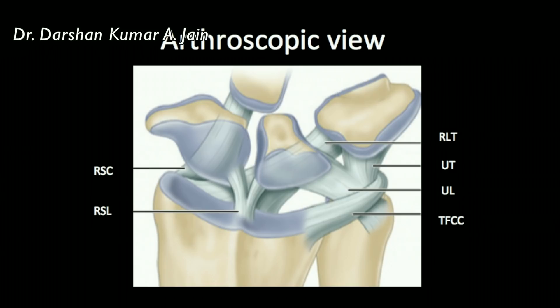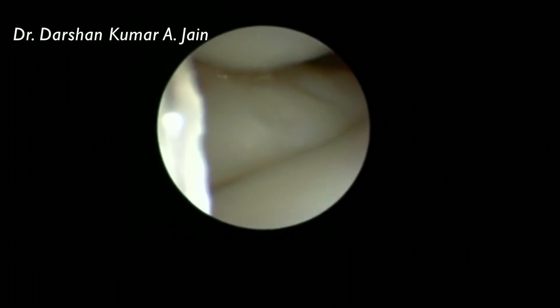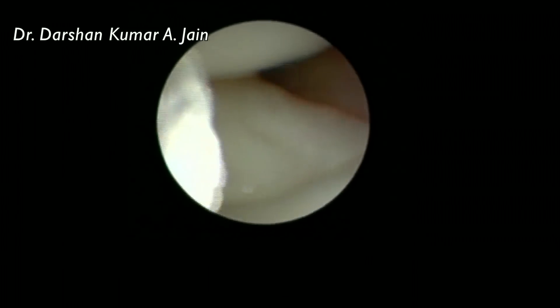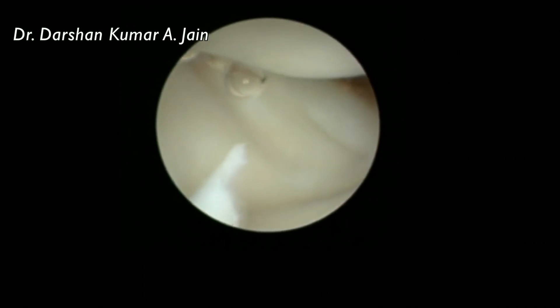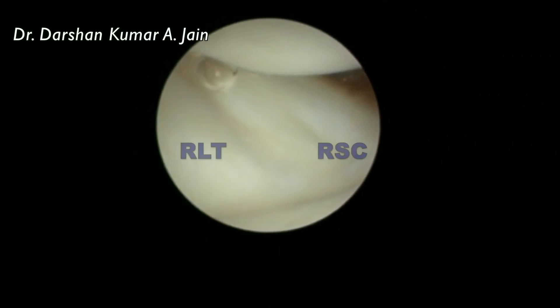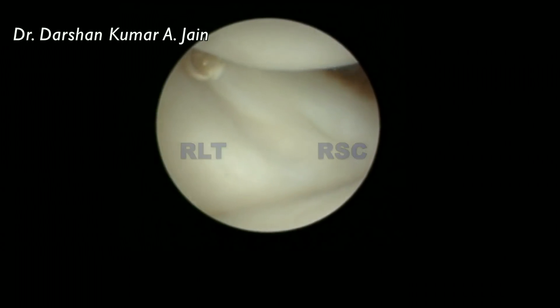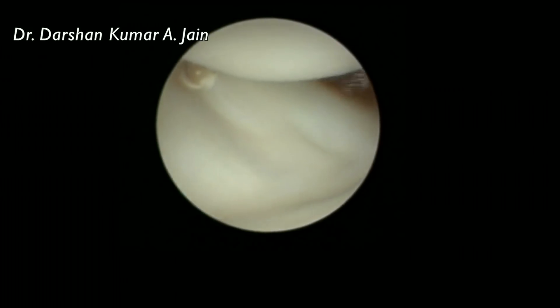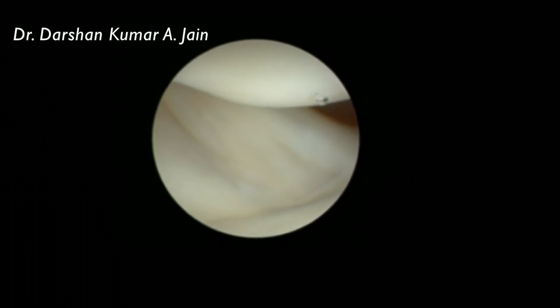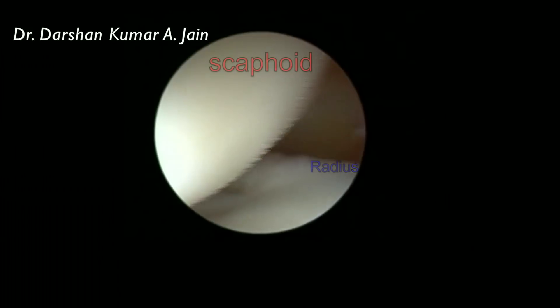The radioscaphocapitate and the radiolunate-triquetral ligaments are the two stout ligaments along the radial side, and the other ligament is the radioscapholunate ligament. You follow a set sequence of inspection. This is towards the radial side — the RSC and the RLT ligament on the radial side. As we go further radially, you can see the radial styloid as well as the scaphoid.